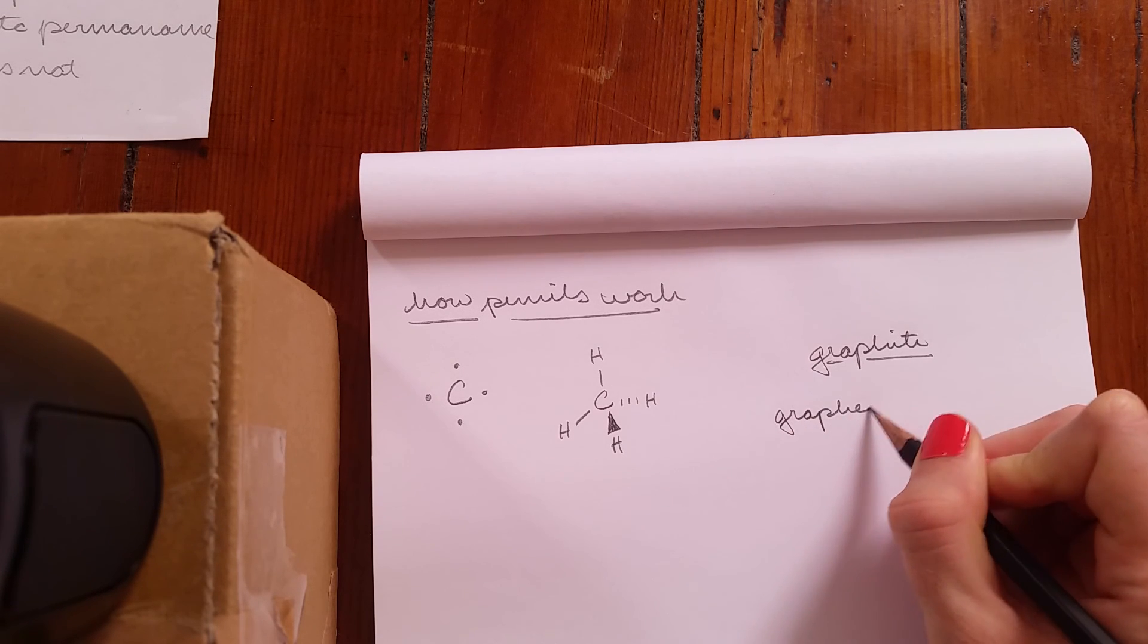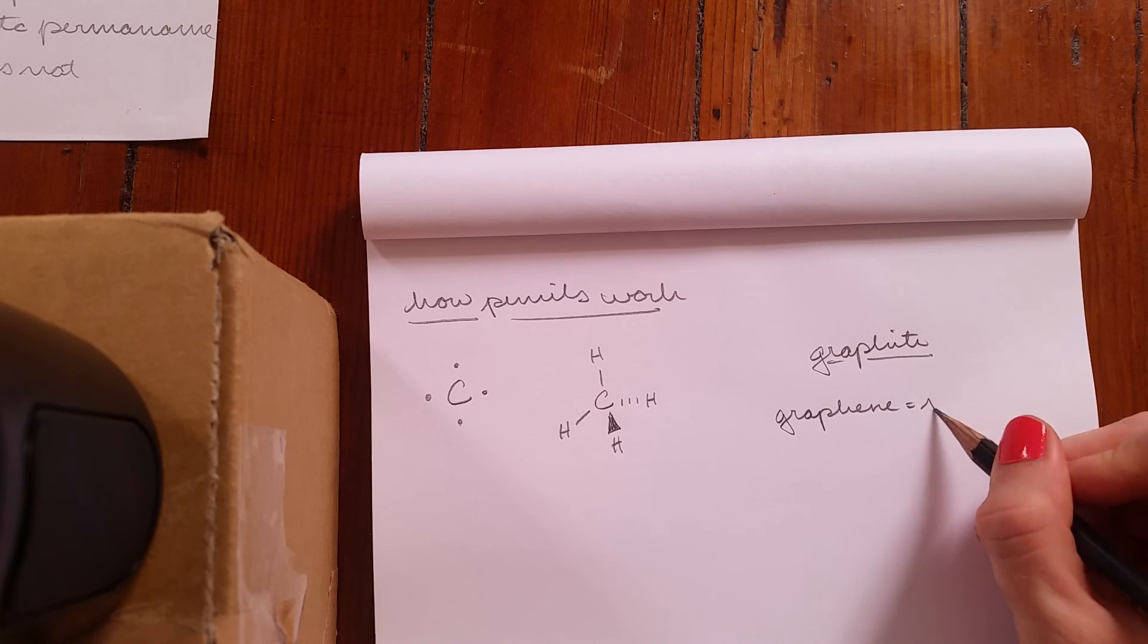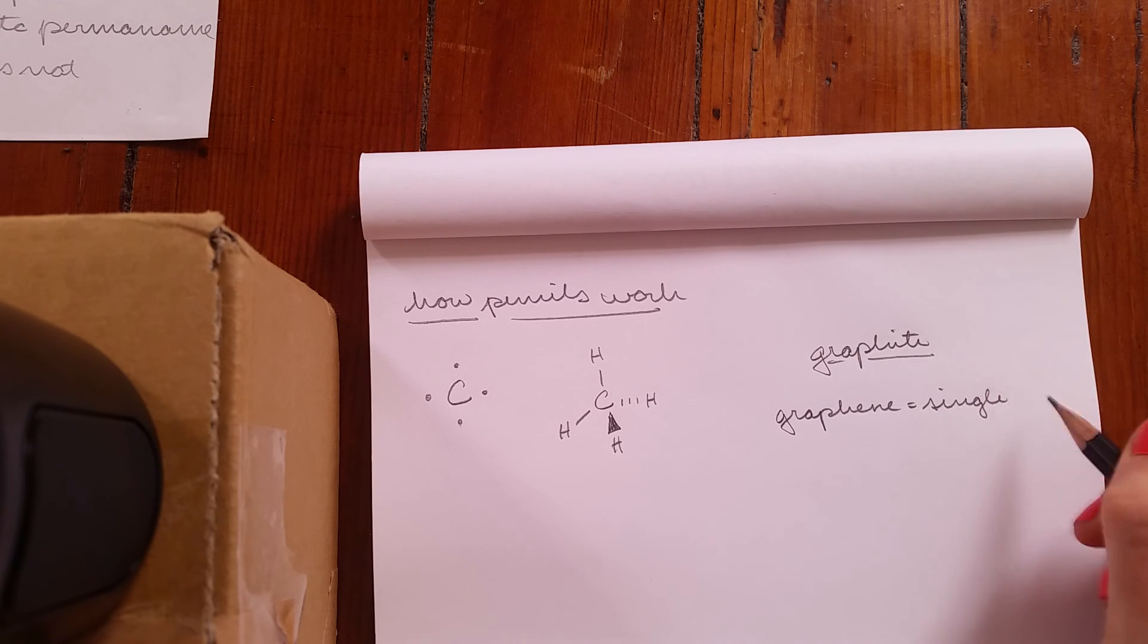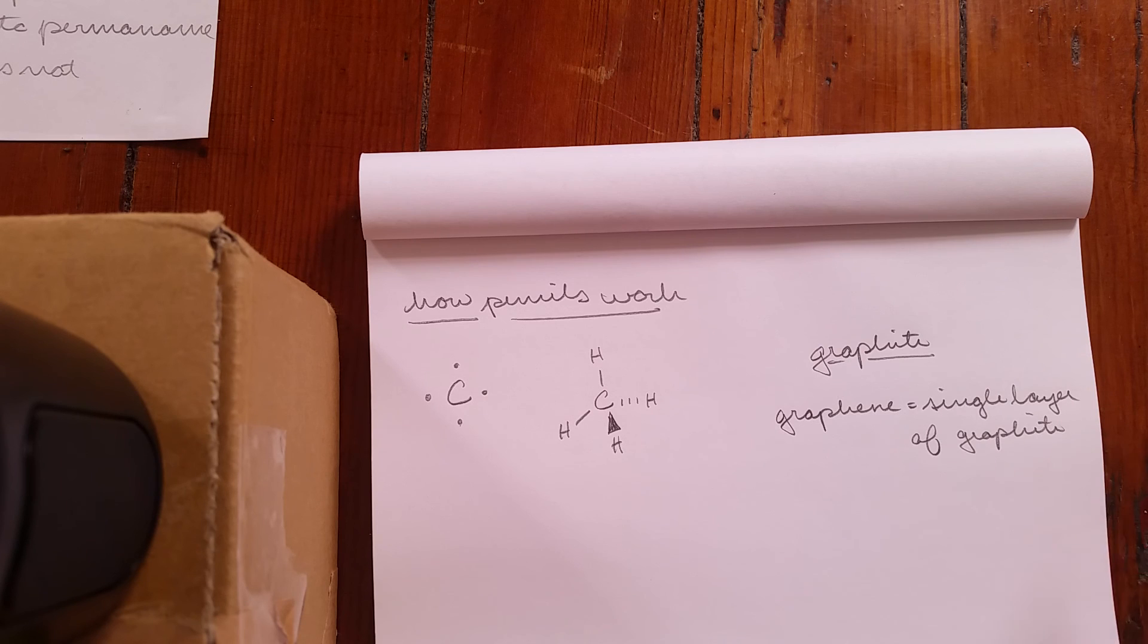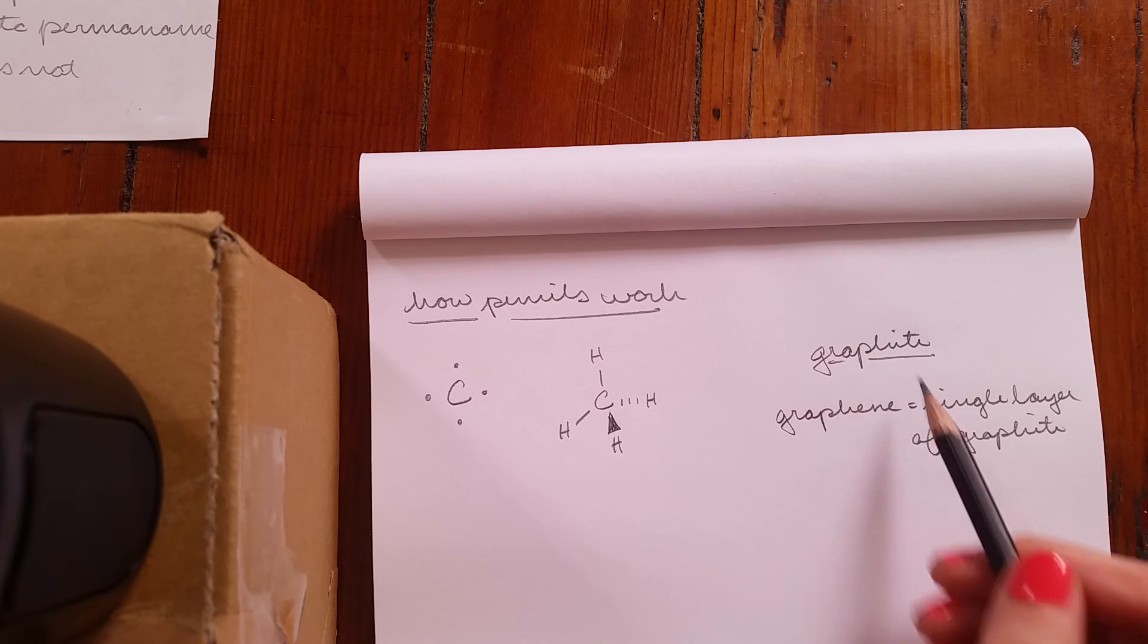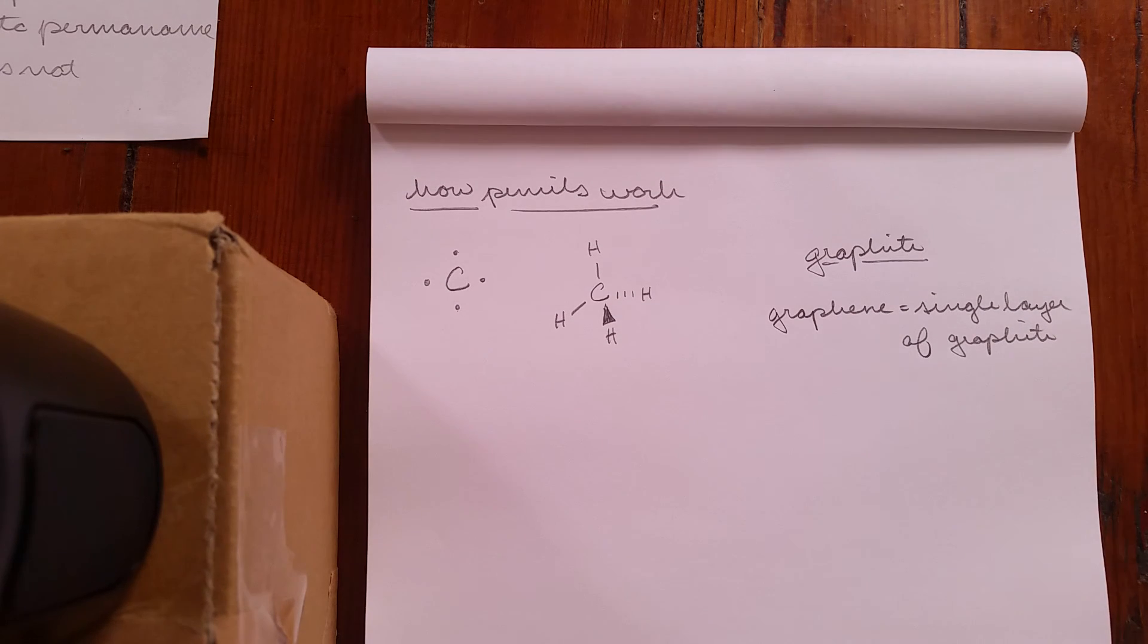So if you guys remember, I think it was maybe a few years ago now, there was a bunch of hubbub in the science world about this thing called graphene. So graphene is basically a single layer of graphite. Graphite is multilayered, it's kind of like a cake, right? You make up graphite with layers and layers of graphene. So let's take a look at what that looks like.